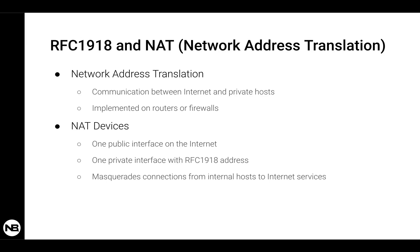Another methodology that made RFC 1918 possible is Network Address Translation, or NAT. NAT devices enable communication between the internet and internal or private networks. NAT is implemented by routers or firewalls. For example, your home router has a NAT that allows your internal hosts, which are not reachable from the internet, to communicate with internet services or internet hosts. A NAT device has one interface on the public internet and one interface on a private network.